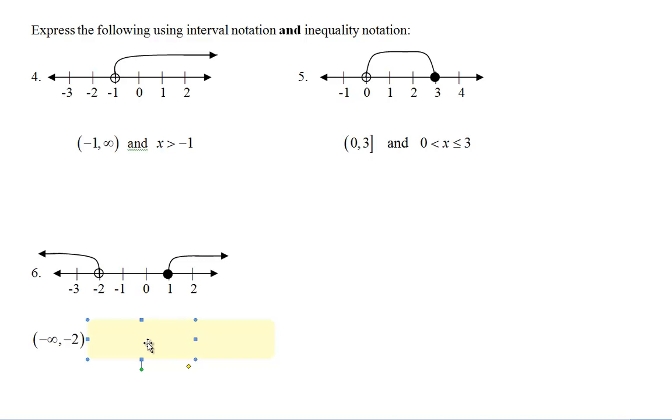Now to indicate there is another section that's shaded, you use what's called a union which means or. On this one my shading on this part starts at 1, goes to infinity. I need a bracket comma infinity parentheses. So there's my interval notation for the number line.